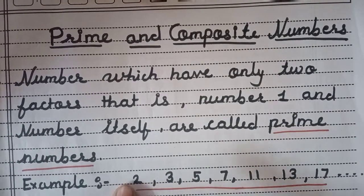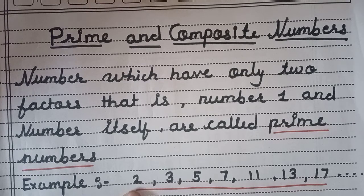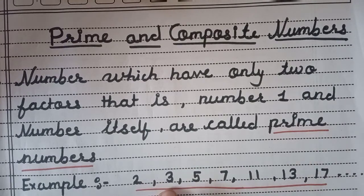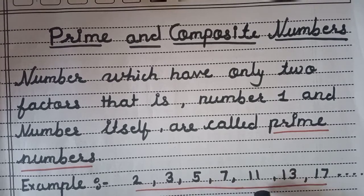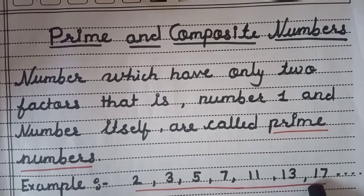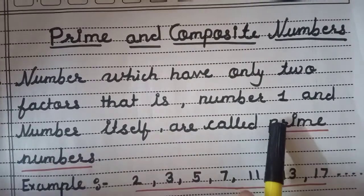2. So 2 के 2 ही factor होते हैं — एक तो वो अपने खुद के table में आता है और 1 के table में आता है, और किसी table में 2 नहीं आता। Like that, 3 also — 3, 1 के table में आता है और उसके खुद के number में आता है, किसी और के table में नहीं आता। Like that 5 also, 7 also, 11 also, 13 also, and 17 and much more than that.